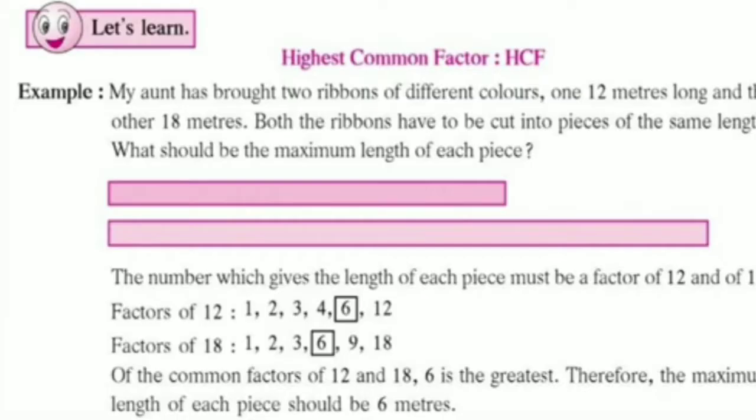My aunt has brought two ribbons of different colors. One 12 meters long and the other 18 meters. Both the ribbons have to be cut into pieces of the same length. What should be the maximum length of each piece? In this example, what is given?